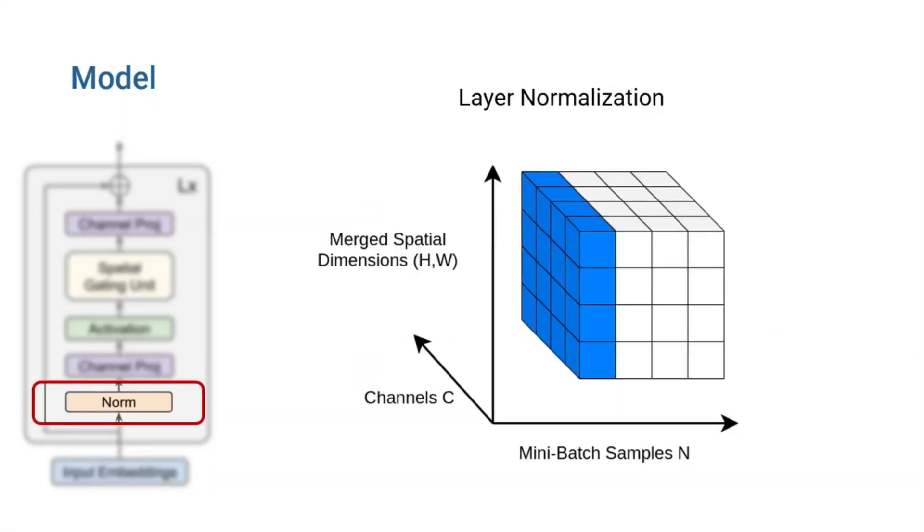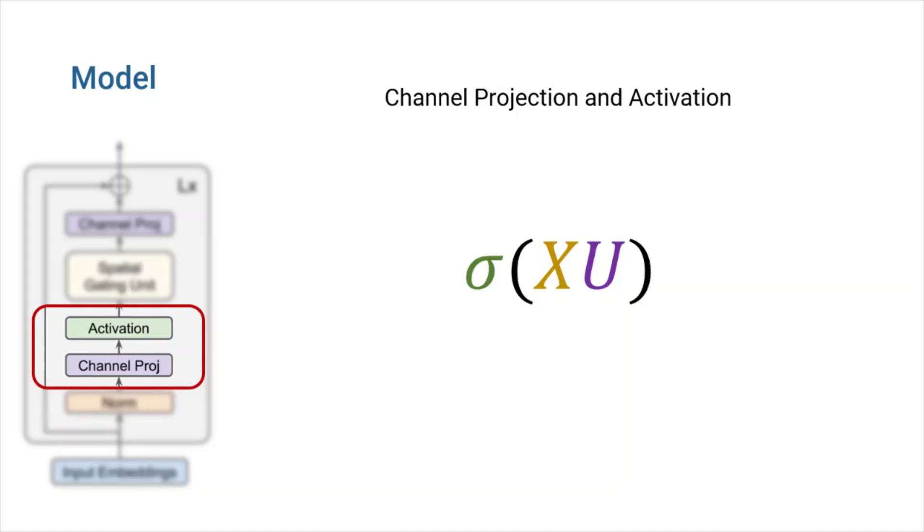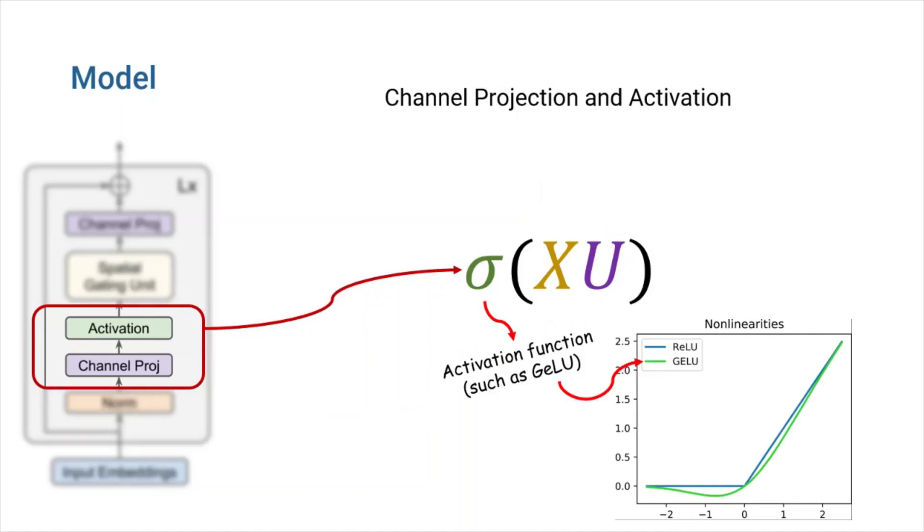Then, our embeddings go through a layer normalization operation. Next, we have channel projection followed by an activation layer. We first perform linear projection along the channel axis on our inputs. Then, we pass the result to an activation function such as GELU. So far, everything is just like a normal feed-forward layer.